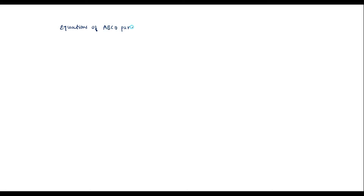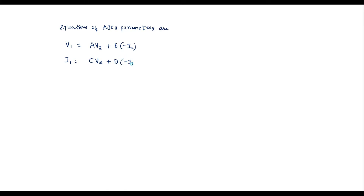The equations of ABCD parameters are: V1 is equal to A·V2 plus B·(minus I2), and I1 is equal to C·V2 plus D·(minus I2). These are the ABCD parameter equations. Let me call these equation 1 and equation 2.